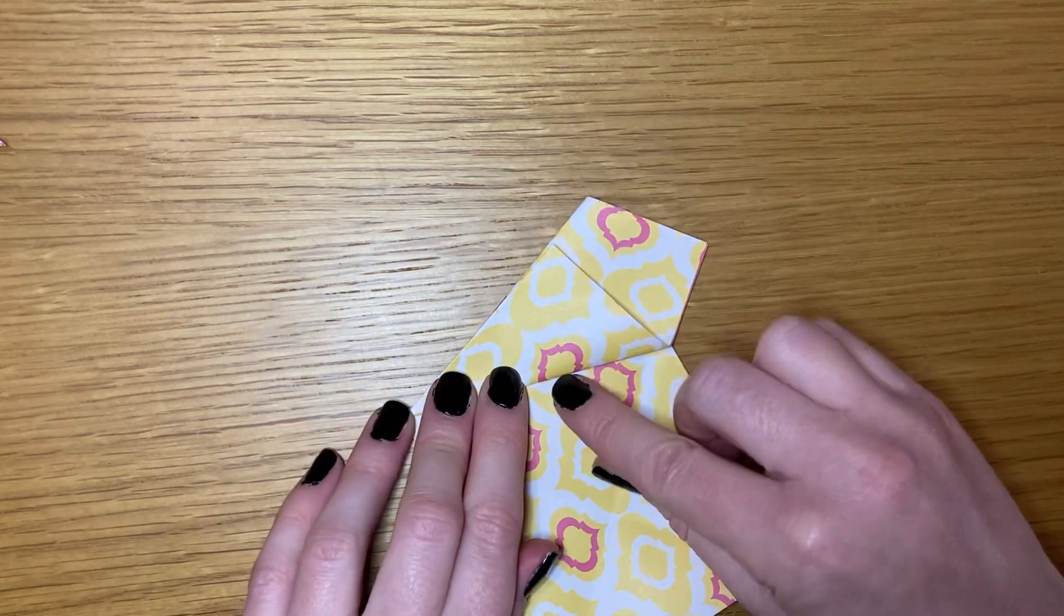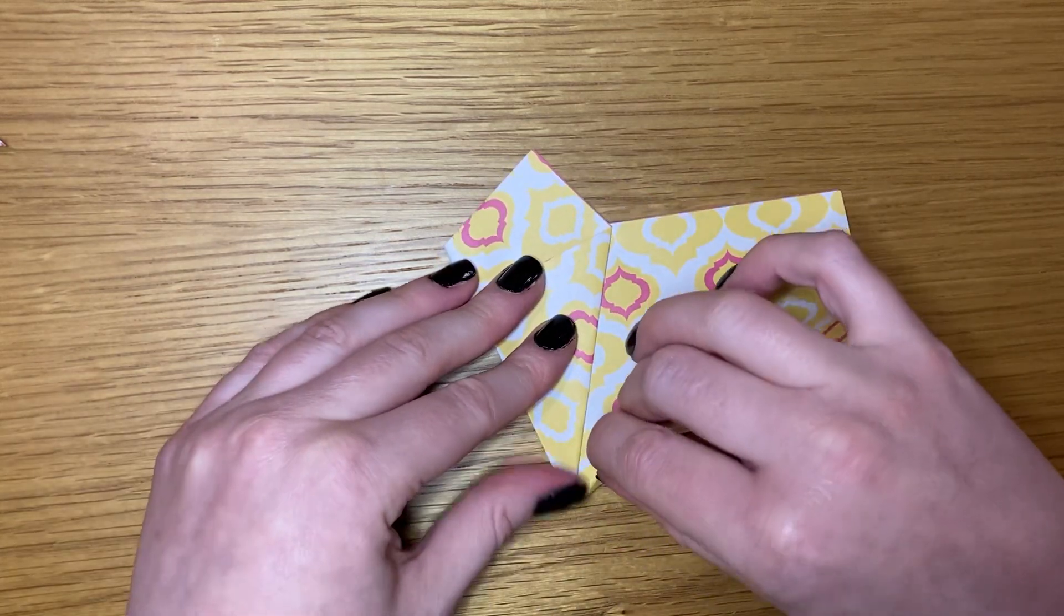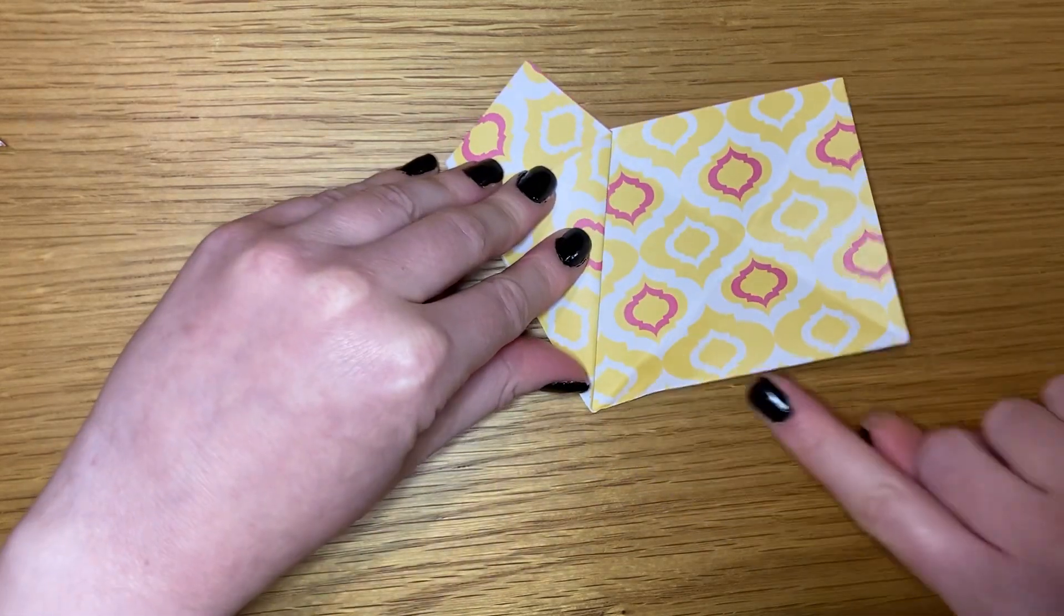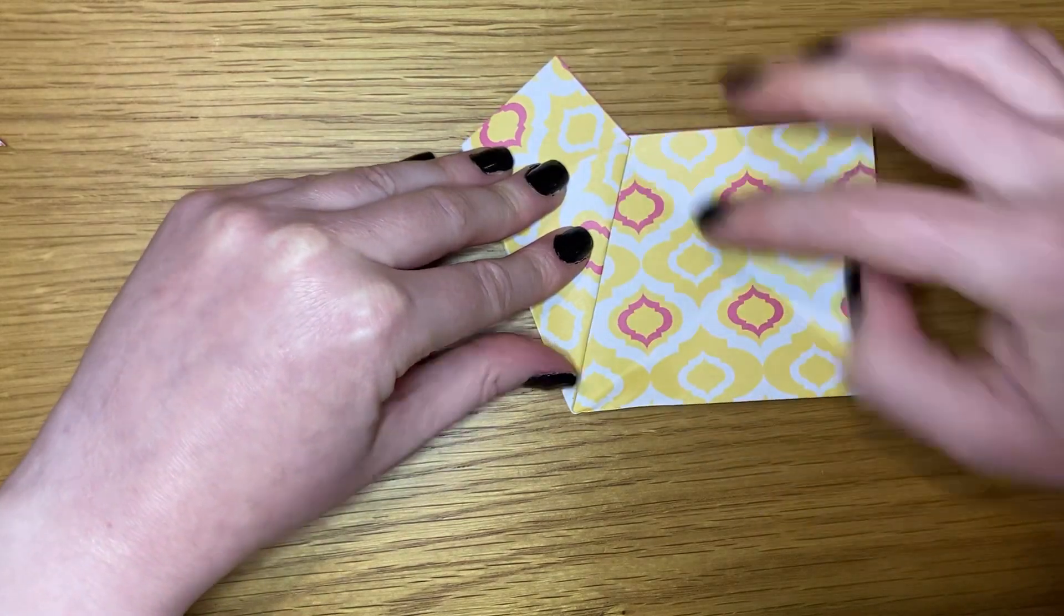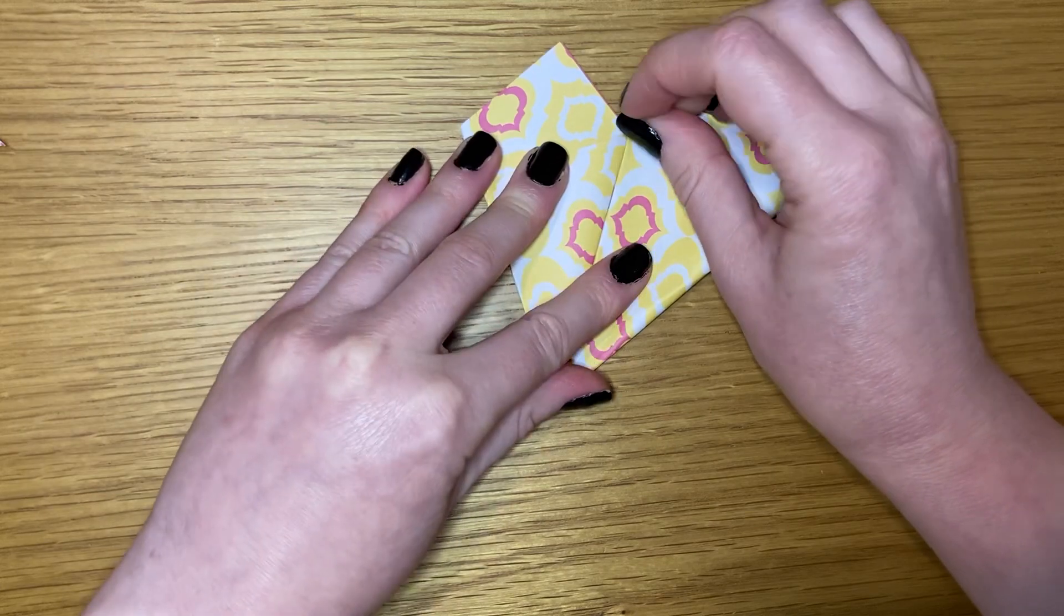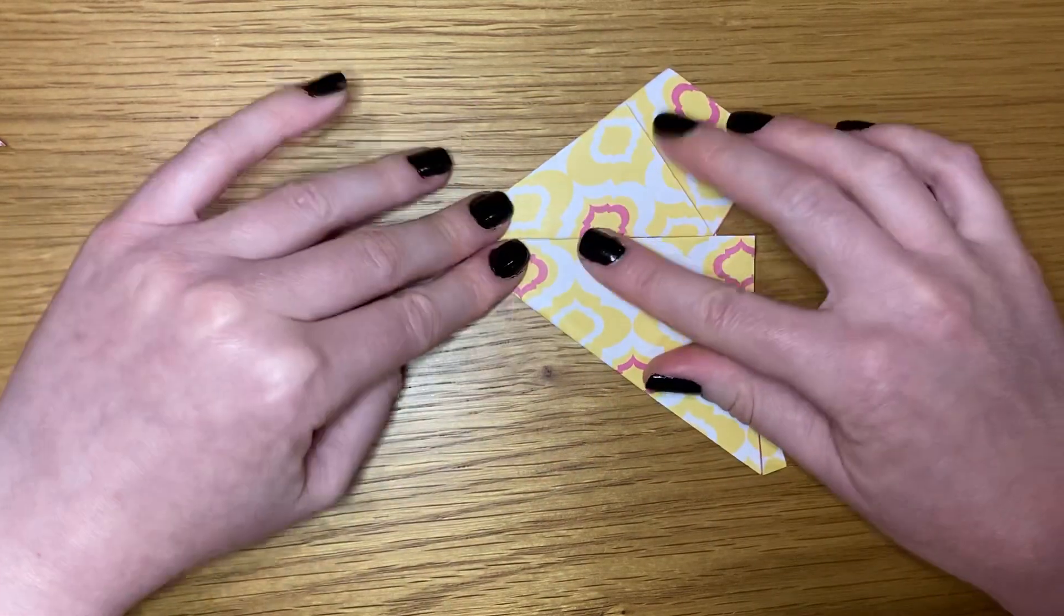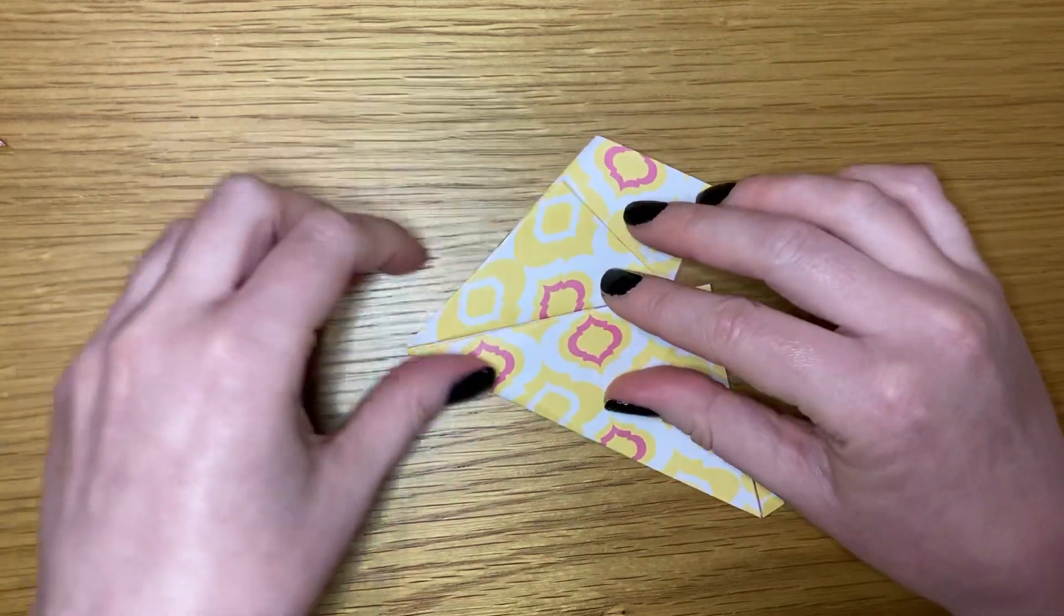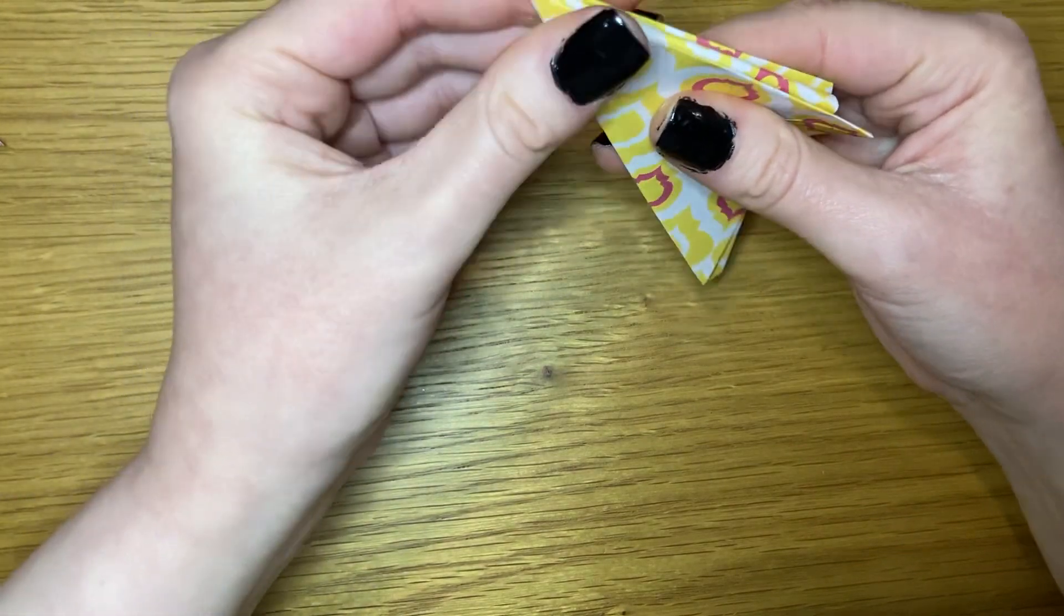Once you've got that triangle done, we are going to roll this part in to make another point. To do that we're going to take the bottom edge here and make it meet the center point here like that, and fold. Once we've got those two folds in place where it now meets in the center, we're going to fold it down and flatten it out.